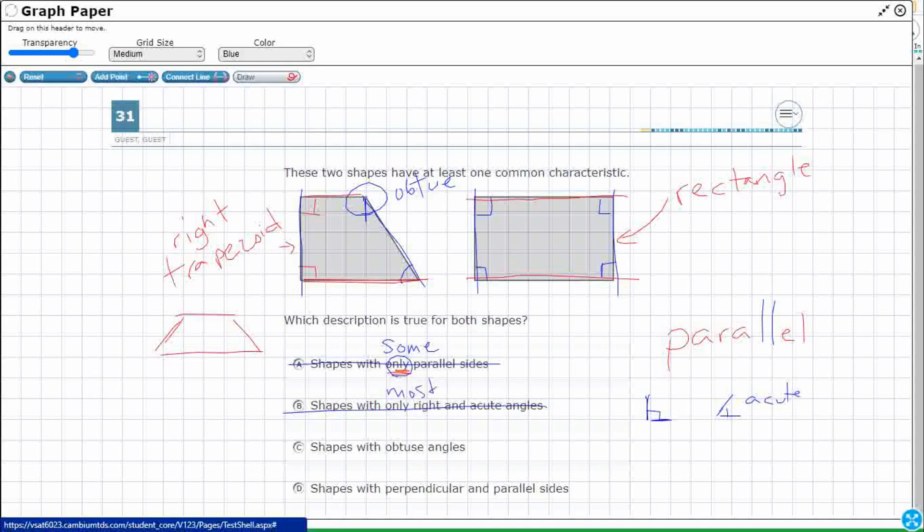If that said maybe mostly, I could have done that. Mostly would have worked. Shapes with obtuse angles. This has got one obtuse angle. There are no obtuse angles right here. So it's definitely not this one.